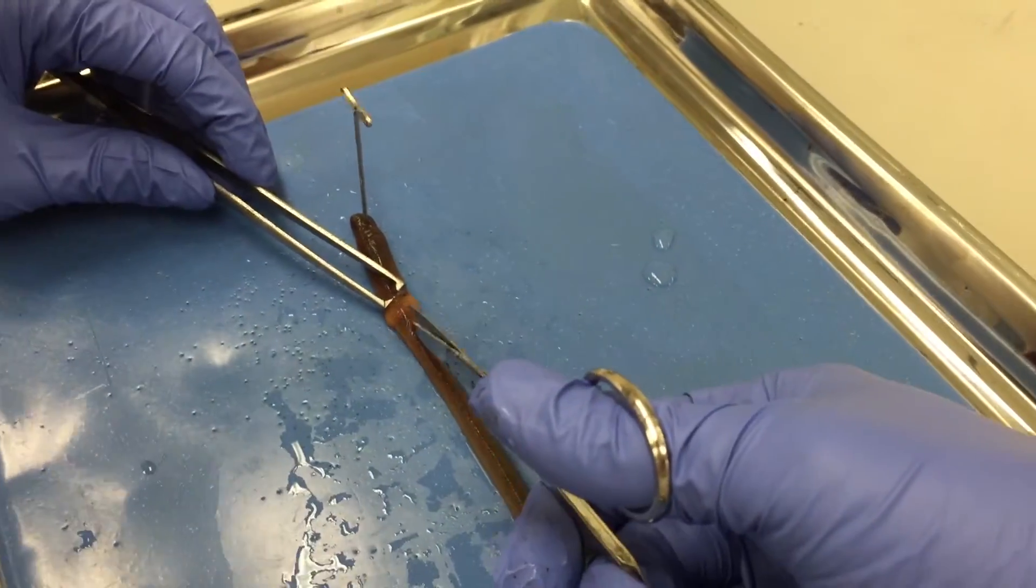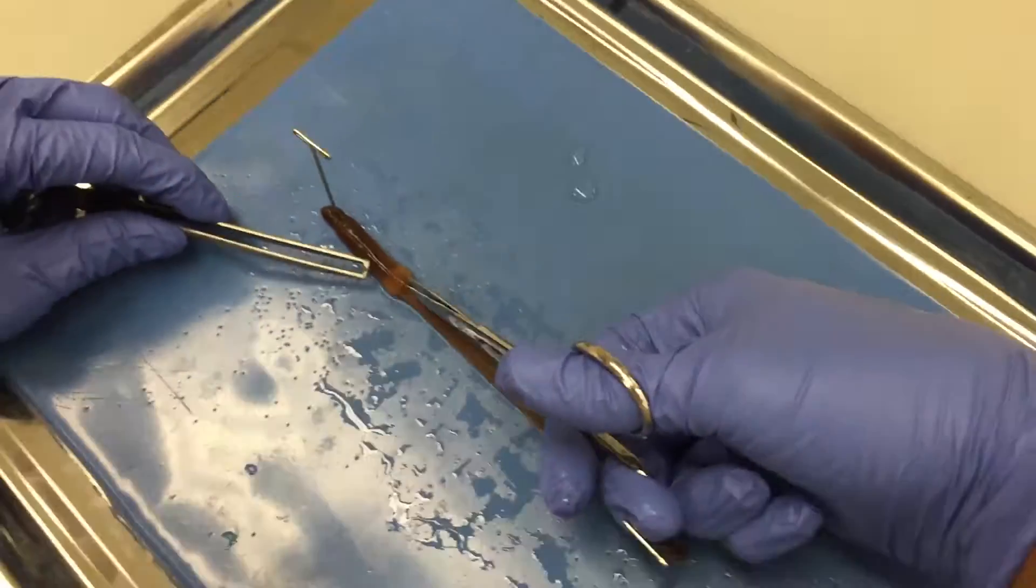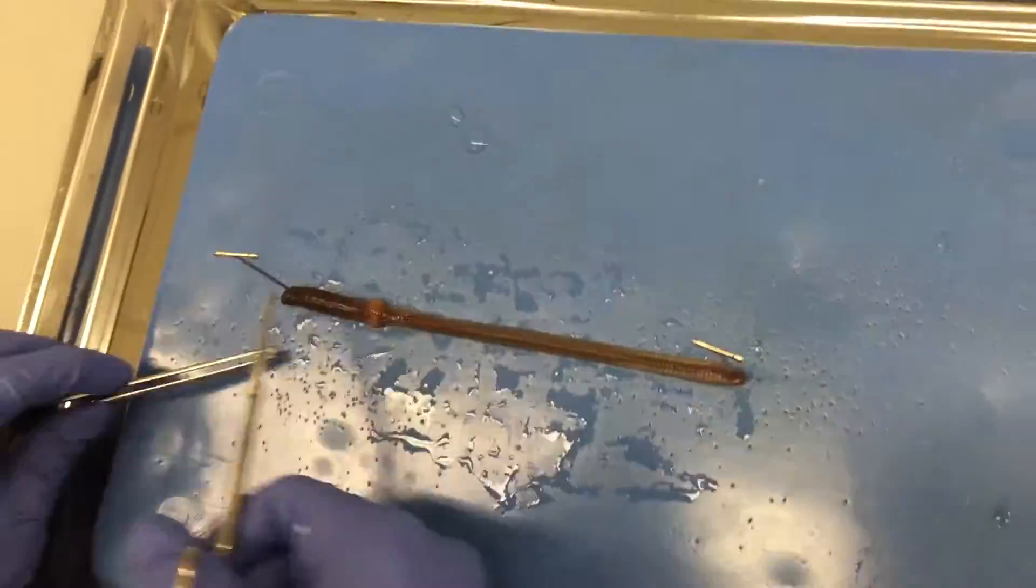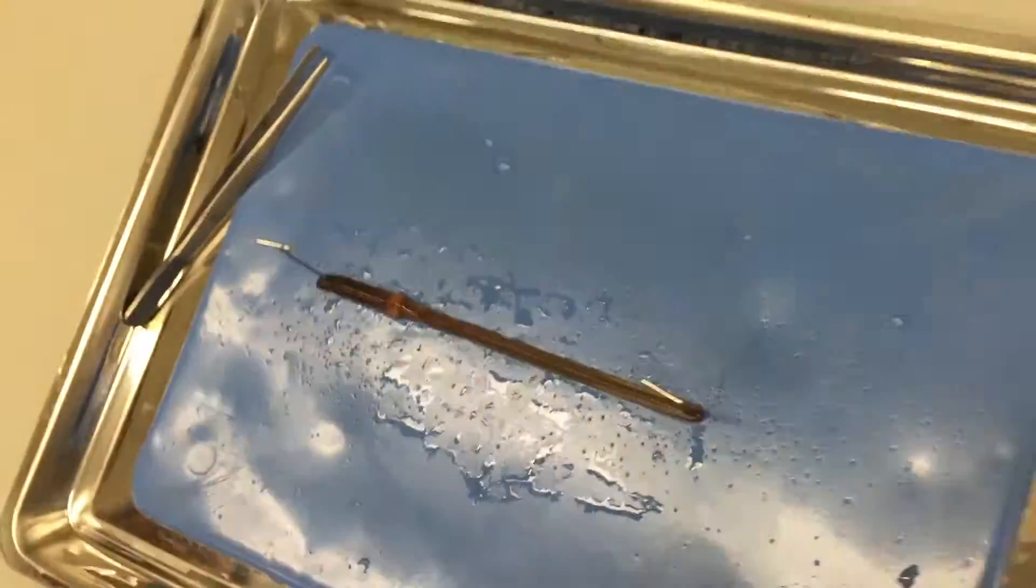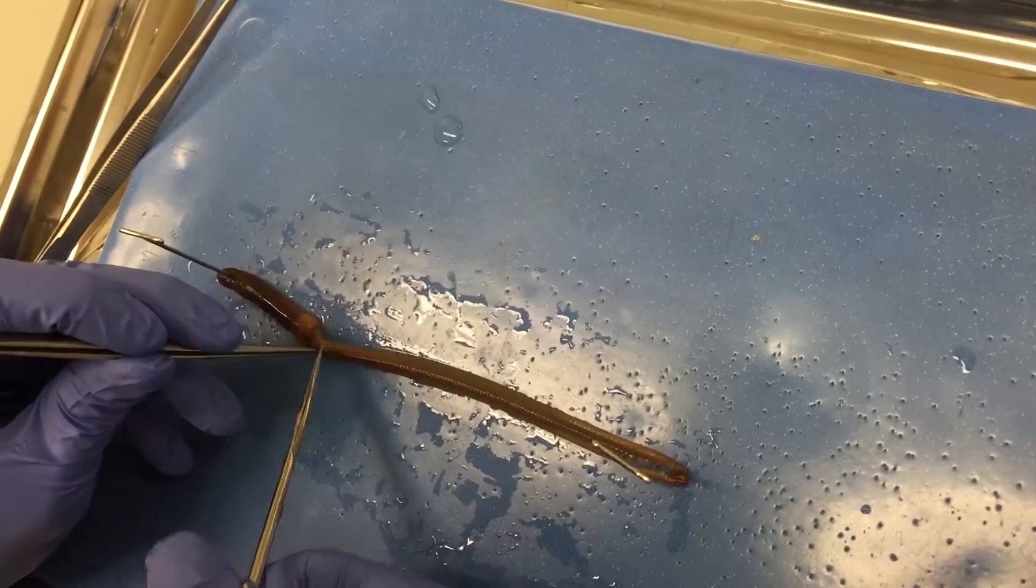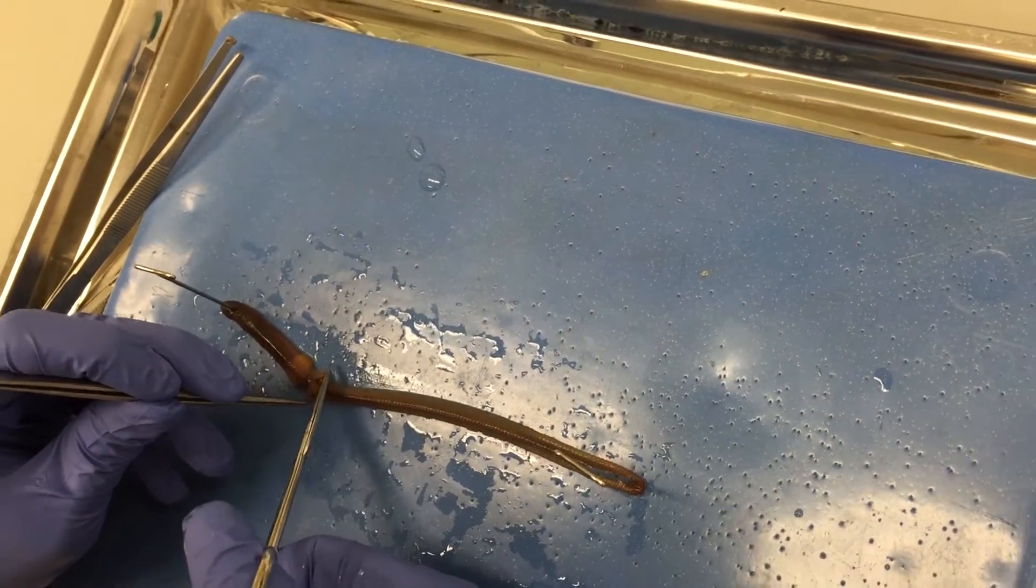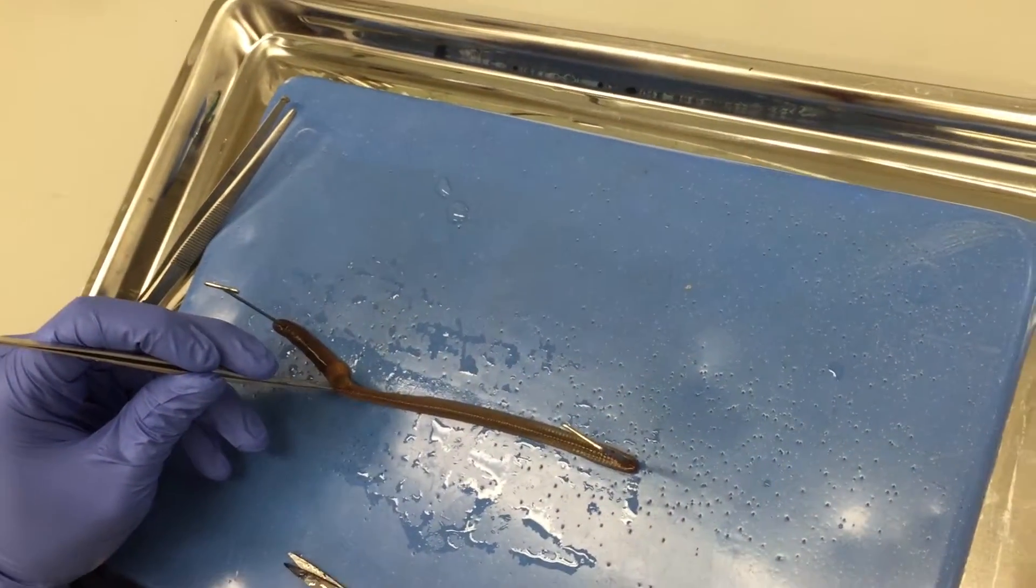Using the scissors, carefully cut down the worm's skin towards and past the clitellum, exposing the internal organs of the worm. You will have to cut away the septum and other connective tissues or structures to effectively open up the worm.